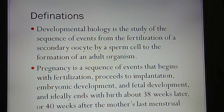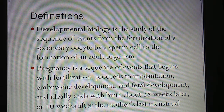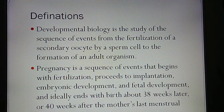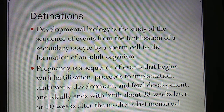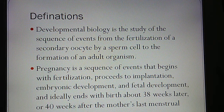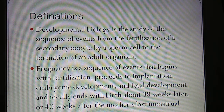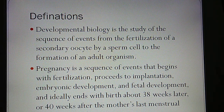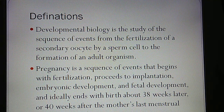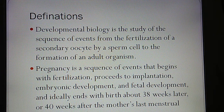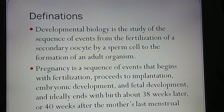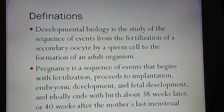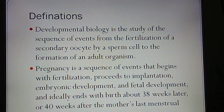Developmental biology is the study of the sequence of events from fertilization of a secondary oocyte by sperm cells to formation of an adult organism. When the secondary oocyte and sperm cell unite, fertilization begins the sequence of events that proceeds to implantation, embryonic development, and fetal development.